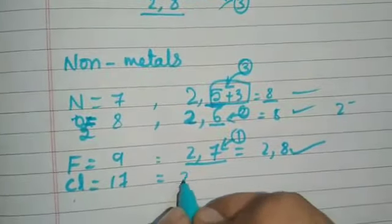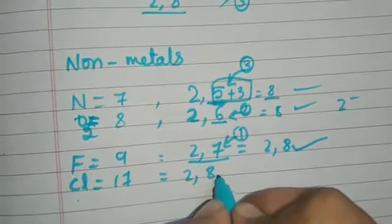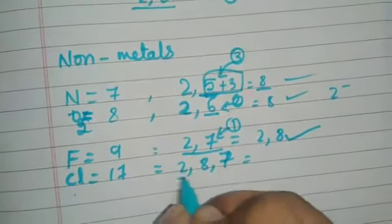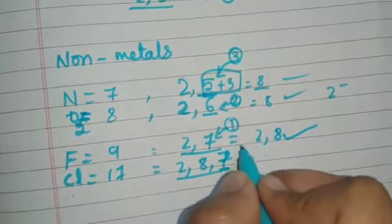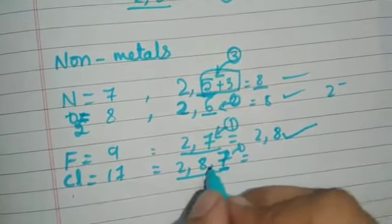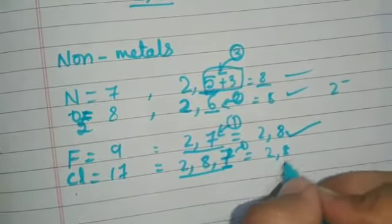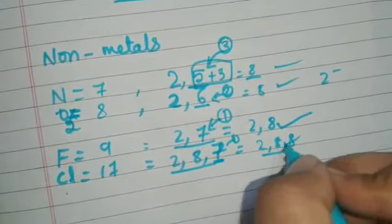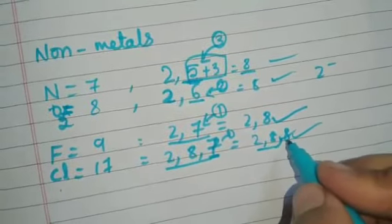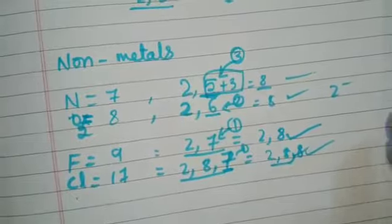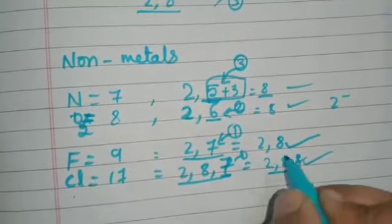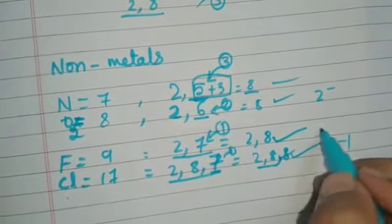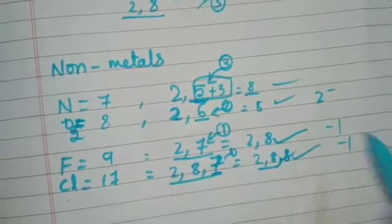Chlorine has atomic number 17, so its configuration is 2, 8, and 7. The outermost shell has seven electrons and requires one more electron to complete the octet. Chlorine gains one electron, and its configuration becomes 2, 8, and 8 — completely stable like a noble gas. Since it gained one electron, it gets a minus one charge.